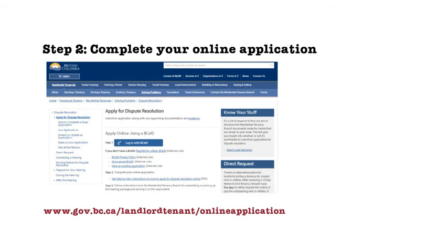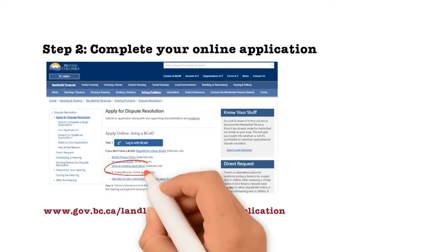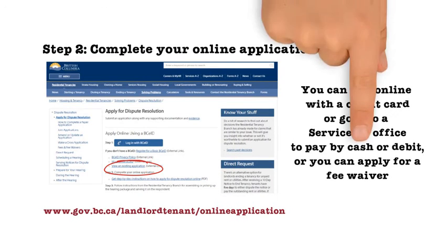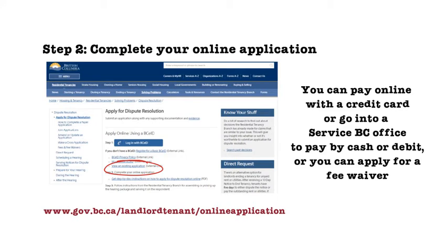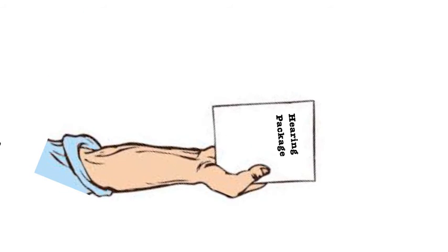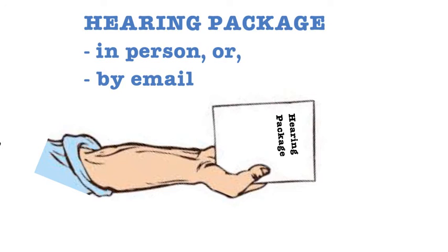Step 2: complete your online application. You can pay for your application online with a credit card, or you can choose to go to a Service BC office and pay with cash or debit, or provide fee waiver information. You can also request to pick up your hearing packages in person or to receive them by email.